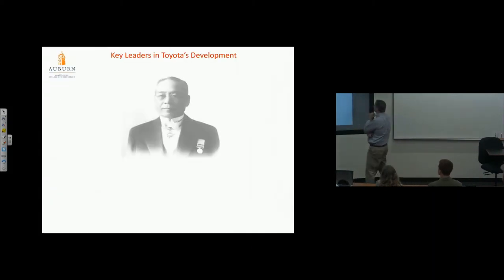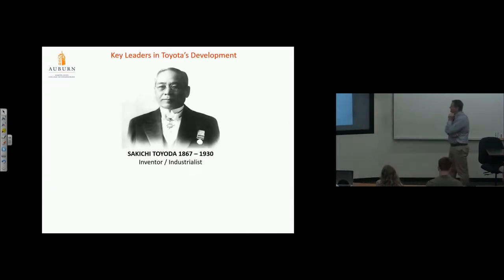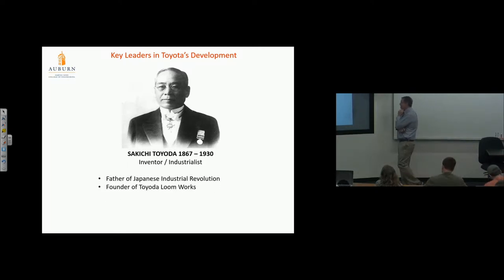Let's talk about the history. Sakichi Toyota was the inventor and industrialist, the father of the Japanese Industrial Revolution, founder of Toyota Loom Works. They made fabric and he invented the automatic power loom. When creating fabric, if the thread would break, the loom would stop. This was a marvel in the industry.